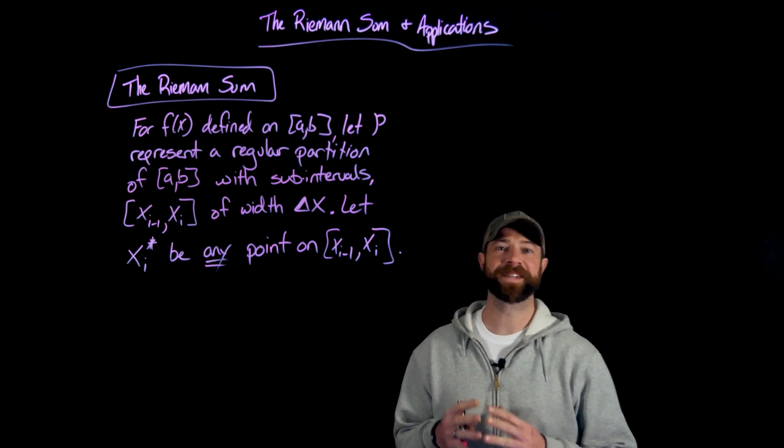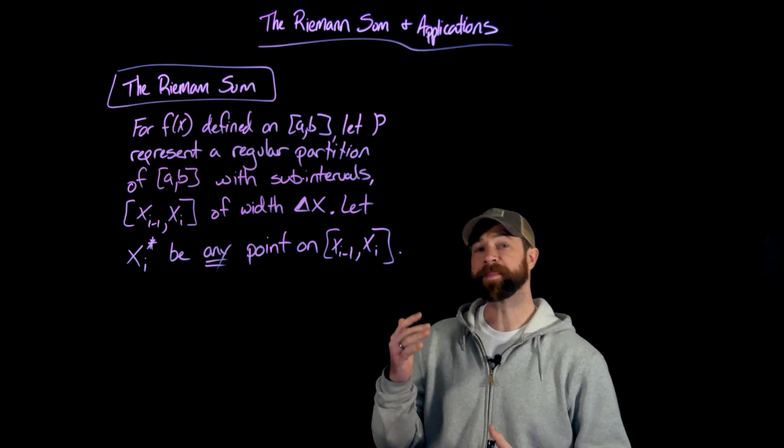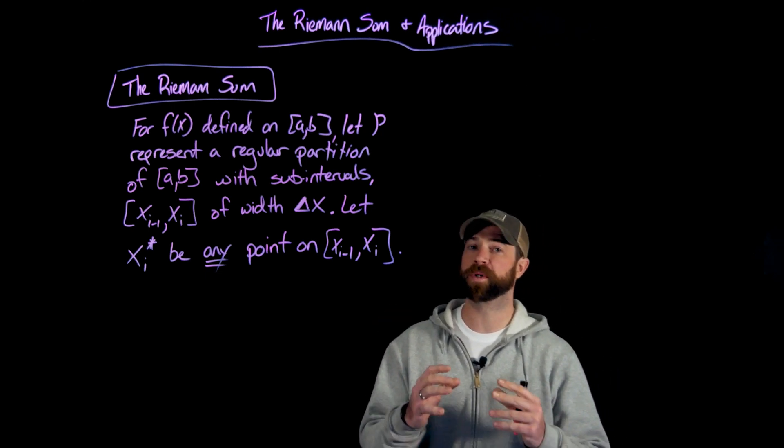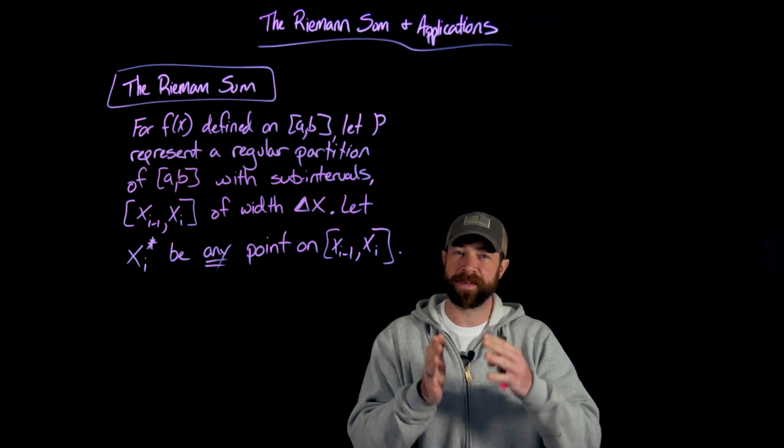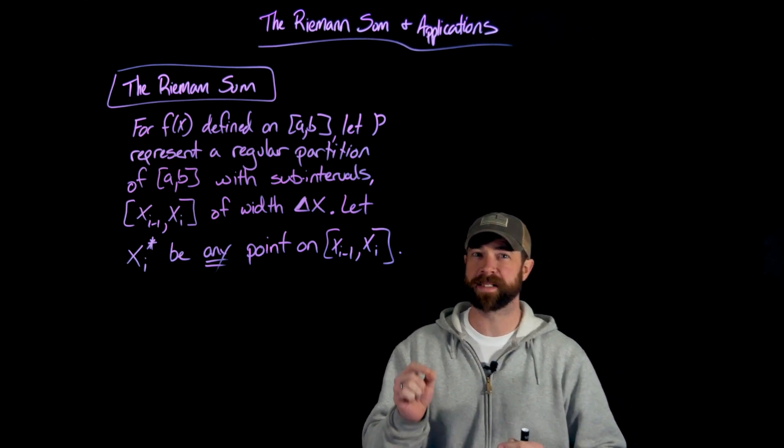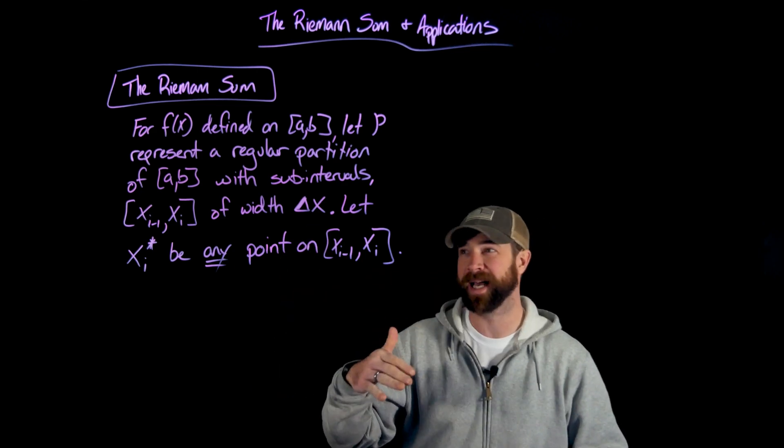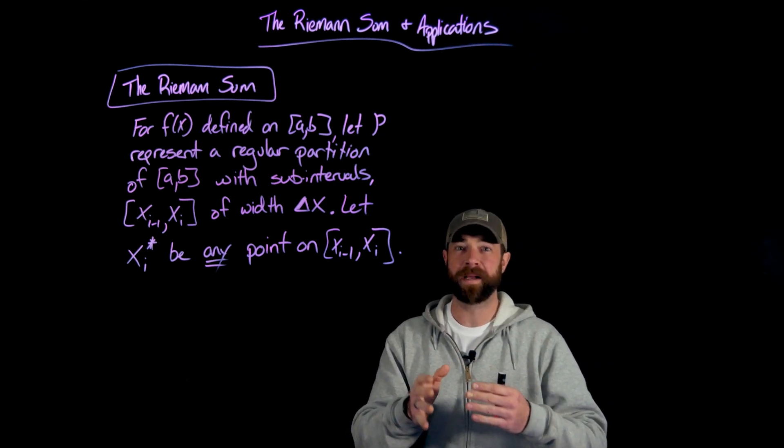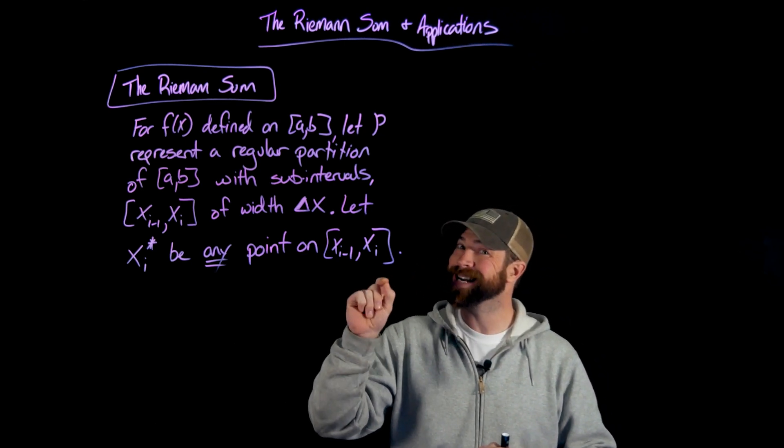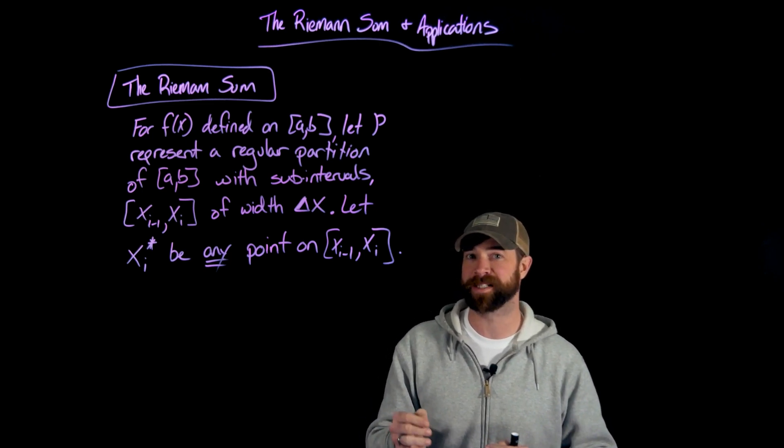So here we have the setup for a Riemann sum, and this is really no different than what was previously discussed. We're talking about a function defined on an interval we're calling AB. We have this regular partition, which means we have these intervals of equal lengths. We'll define those lengths, or the widths of those intervals, as delta x. Each ith interval is this xi sub 1 comma xi. And then we're going to let xi star, and this is the significant difference between the last two approximations.